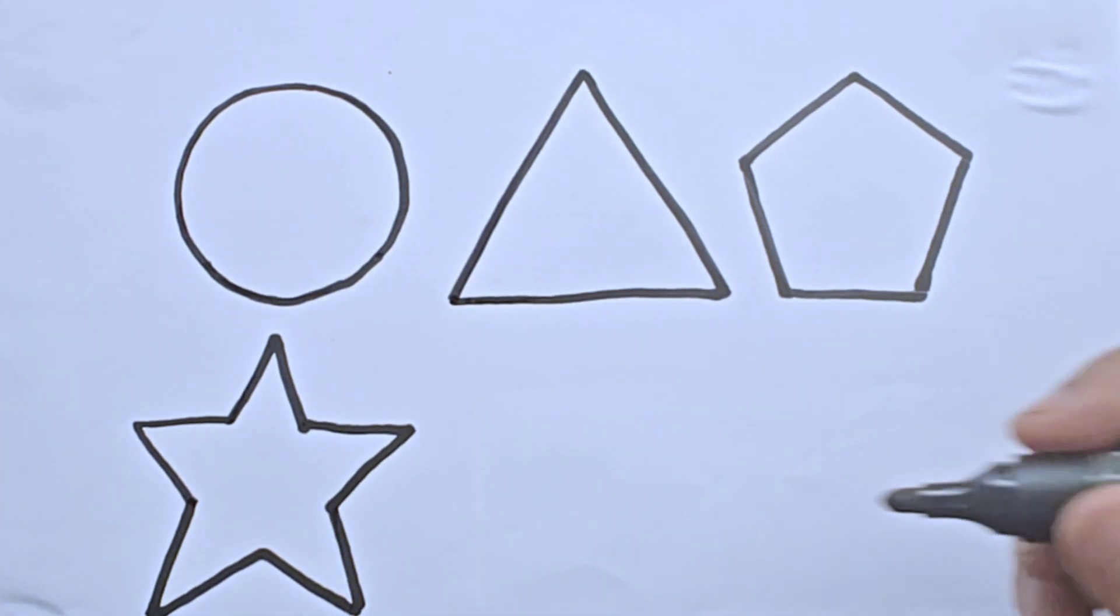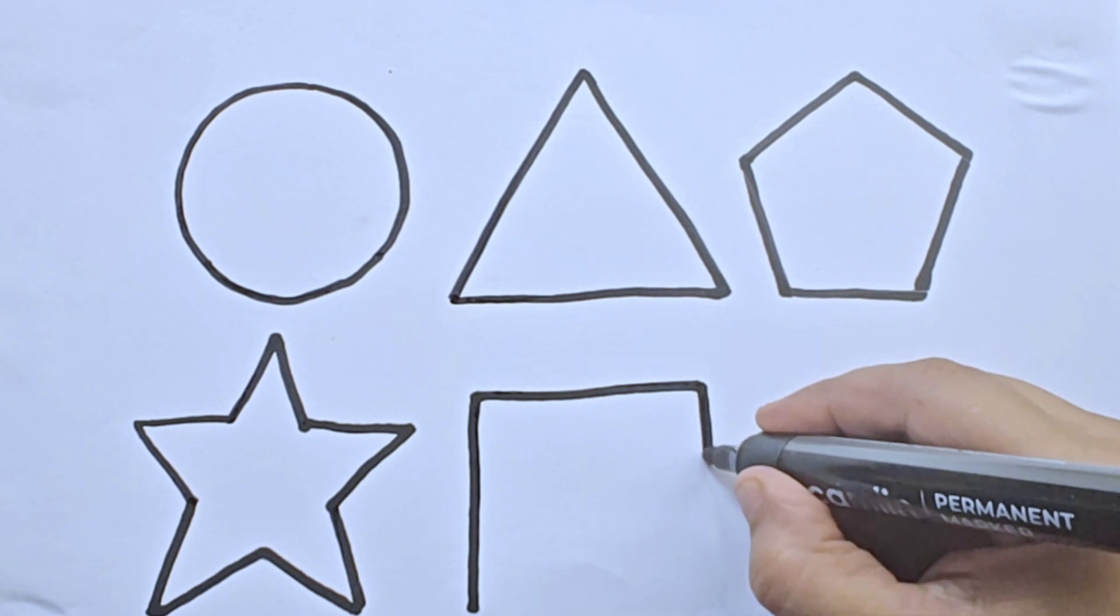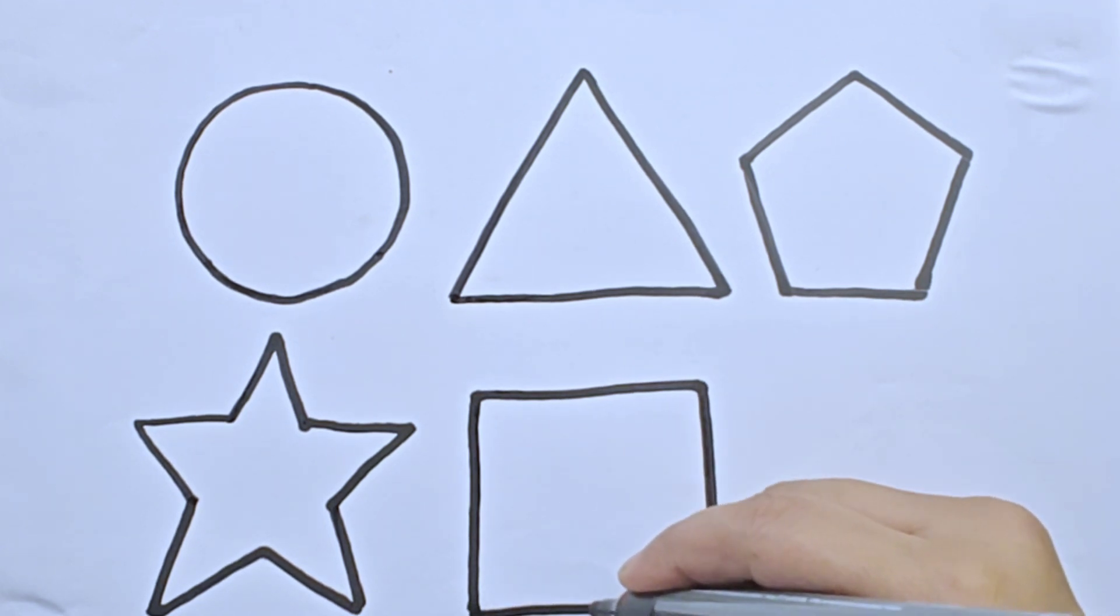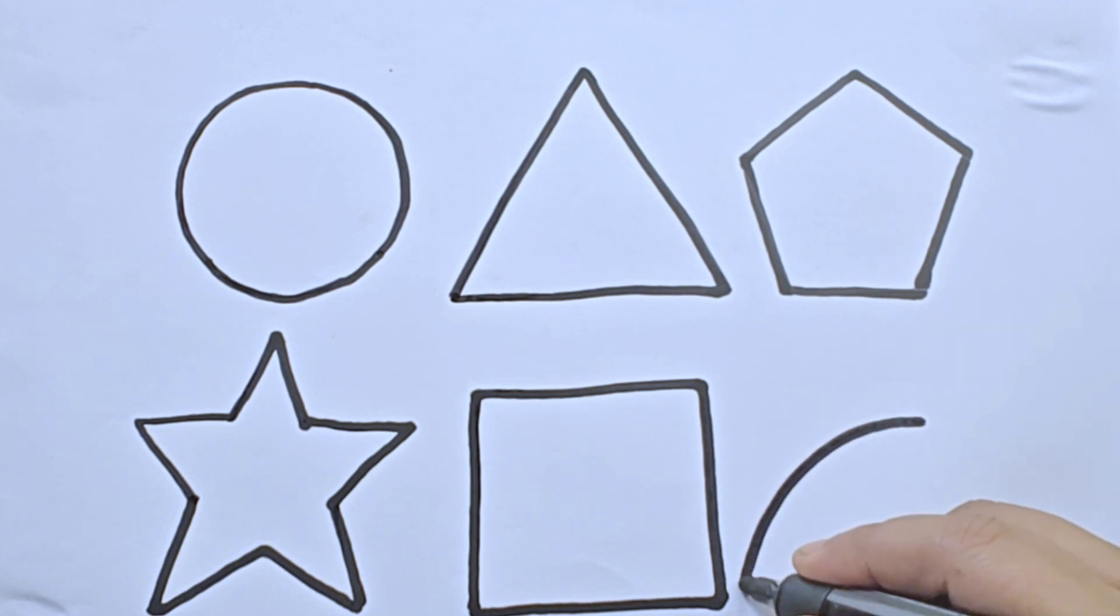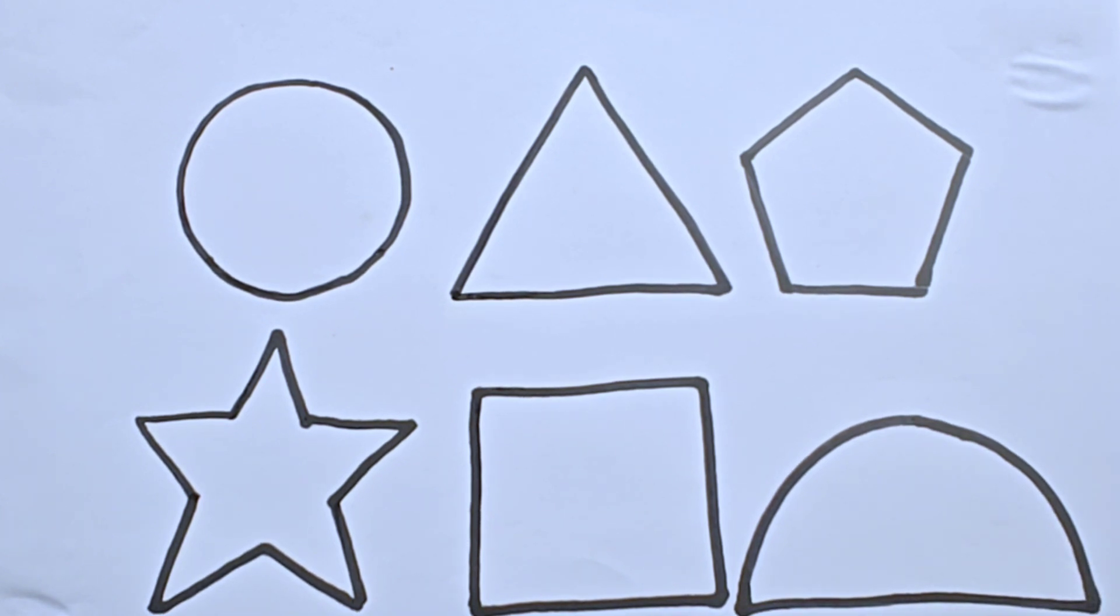5-pointed star. It is square. It is half circle or semi circle.